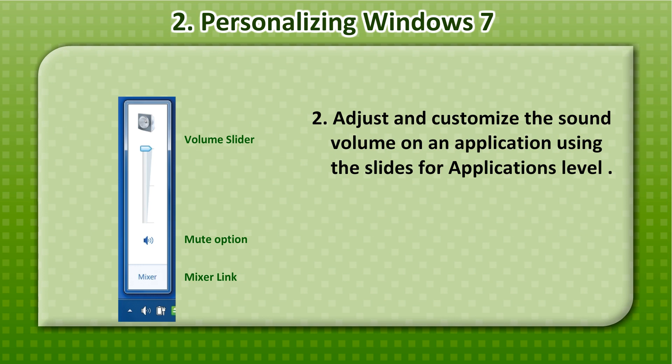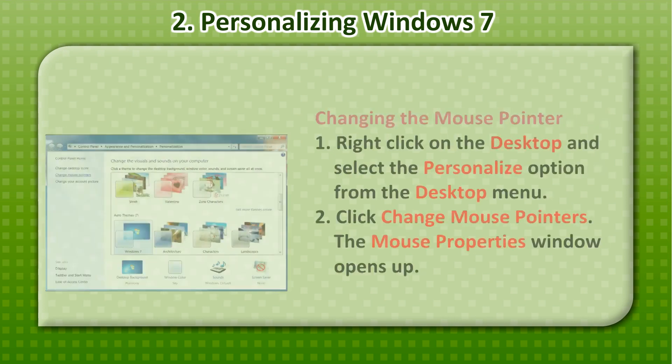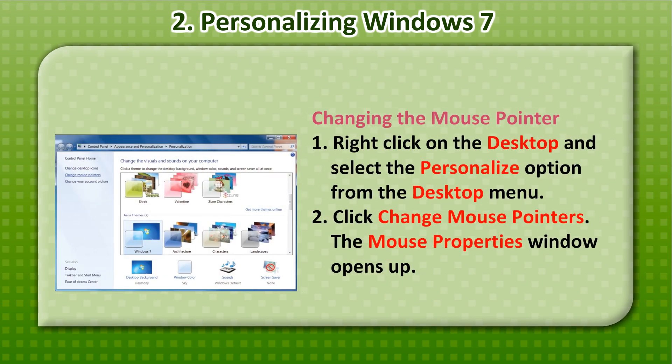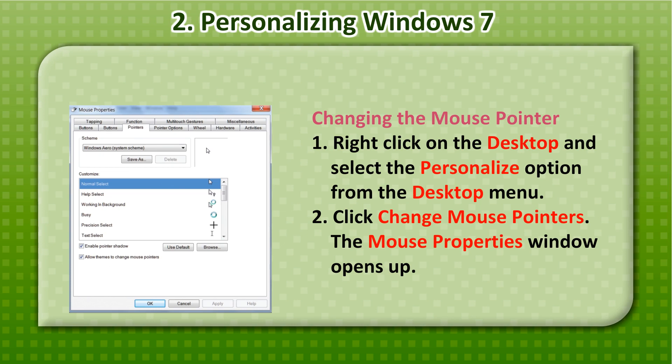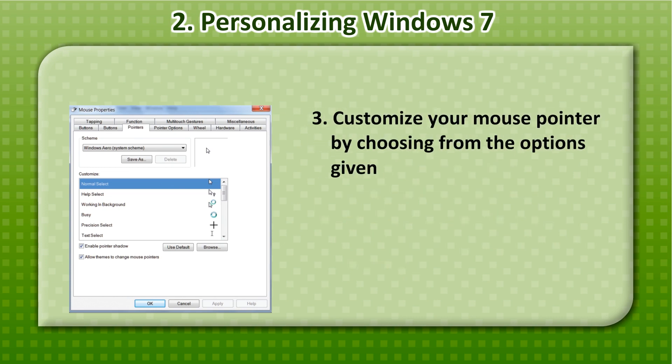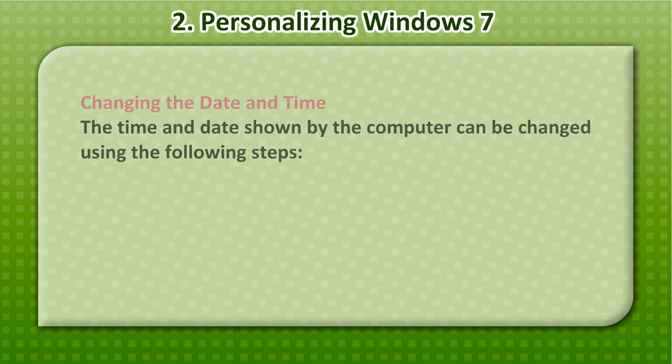2. Adjust and customize the sound volume for an application using the sliders for application level. Changing the Mouse Pointer: 1. Right-click on Desktop and select the Personalize option from the Desktop menu. 2. Click Change Mouse Pointers; the Mouse Properties window opens up. 3. Customize your mouse pointer by choosing from the options given.